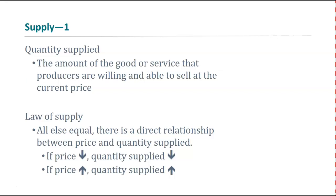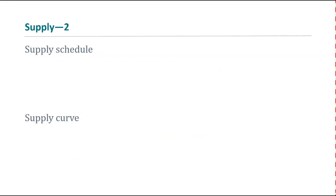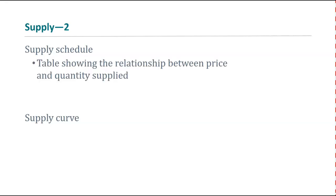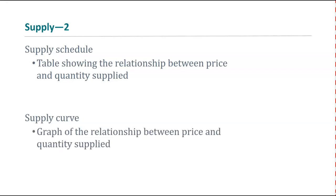This is the law of supply, and it's the opposite of the law of demand, where price going up means quantity demanded goes down. Just like the demand side, we have the supply schedule — the table showing the relationship between price and quantity supplied. If we graph that, we get a supply curve: the graph of the relationship between price and quantity supplied. Go ahead and pause and think about what that curve will look like if you put price on the vertical axis and quantity supplied on the horizontal axis.